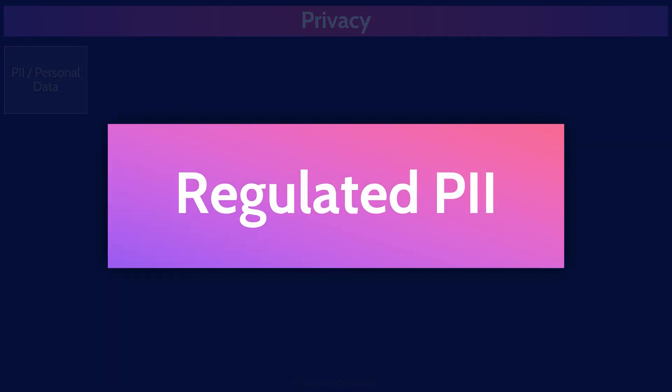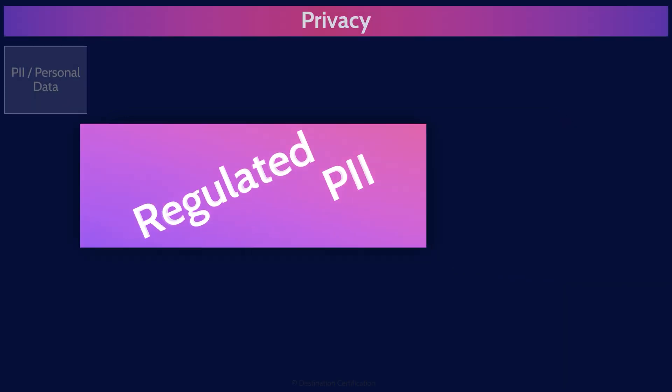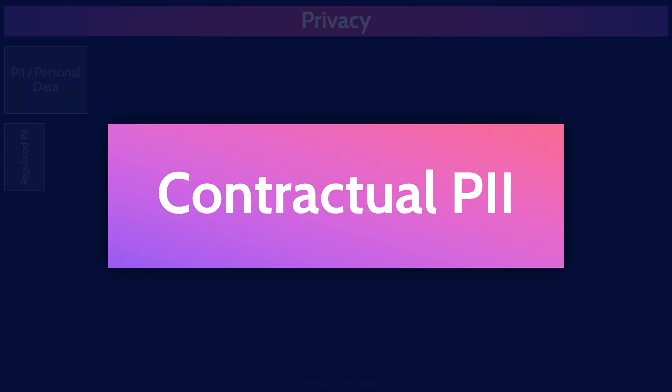There are two types of personal data, or personally identifiable information, that you should know about. Regulated PII is personal information that must be safeguarded according to a specific regulatory regime, such as GDPR — so it's regulated by a specific regulation. Contractual PII is personal information that must be protected according to contractual work agreements or requirements. For example, an organization processing personal data on behalf of another organization would have to abide by any safeguards set out in the contract.